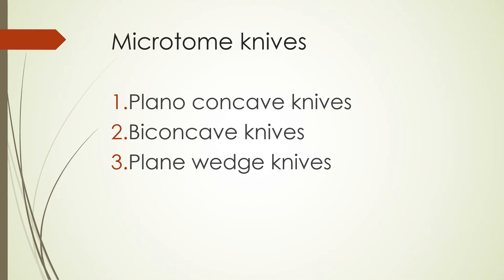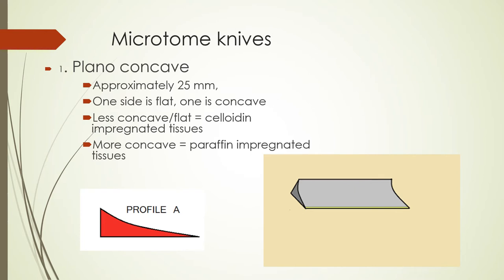For microtome knives, we have three types: the planoconcave, the biconcave, and the plain wedge knives. These are not disposable — they are regularly maintained by honing and stropping. Starting with the planoconcave, it is approximately 25 millimeters long. One side is flat and one side is concave in shape. The less concave or flat side is used for celloidin-impregnated tissues, and the more concave side is used for paraffin-impregnated tissues.